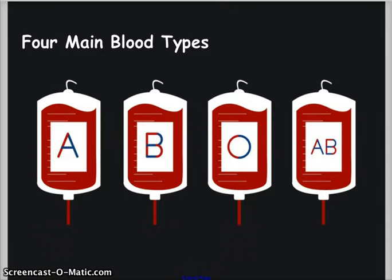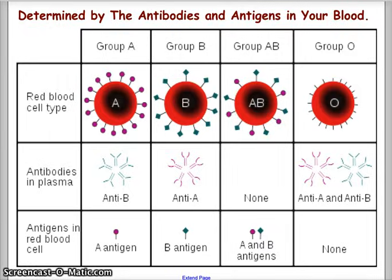We do have a rhesus factor — the positive or negative factor — but we're not going to go into that for our purposes here. For Mendelian genetics, it would be valuable for you to know your own blood type in case you were in an accident and needed a transfusion, or if you decided to donate blood, which is a very important service opportunity to your community.